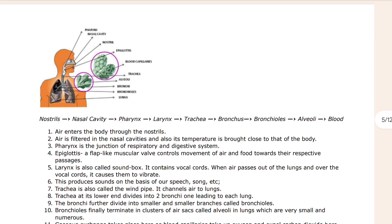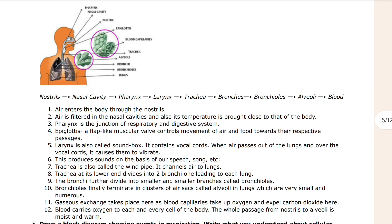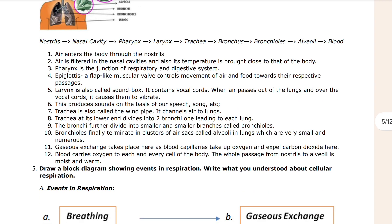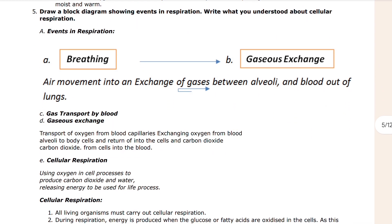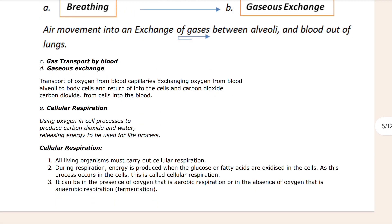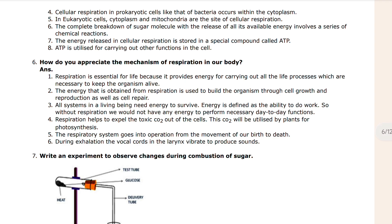Then you can see: what is the pathway taken by air during respiration? Here is a diagram — it is also given in your textbook, so it is something related to that. Next is: draw a block diagram showing events in inspiration. Then here you can see cellular respiration is given as a question as well.